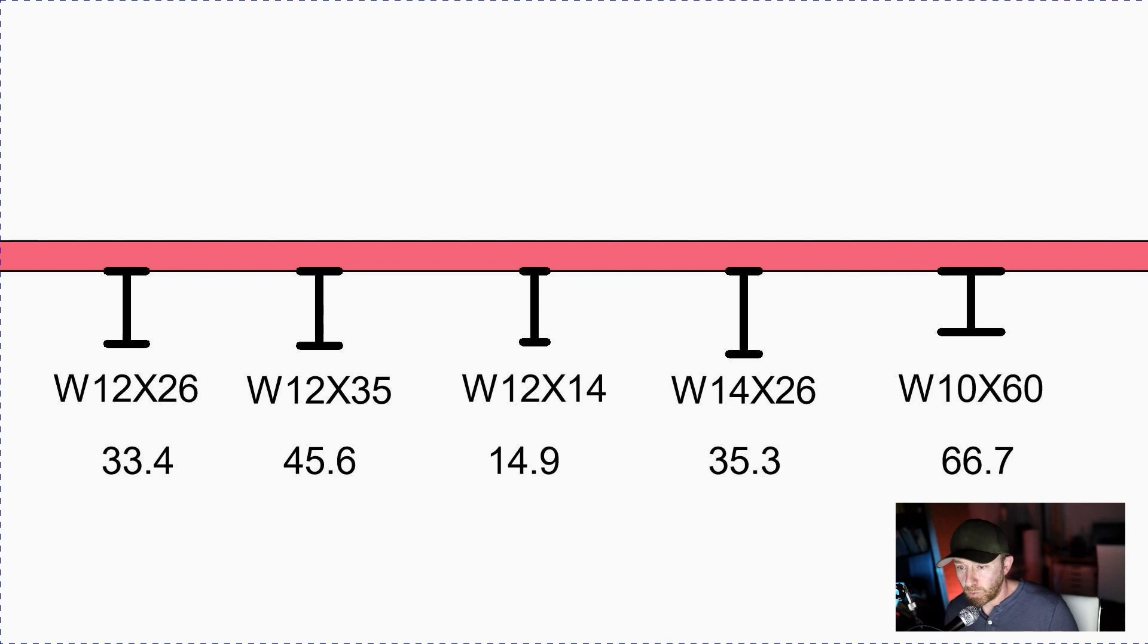Anyway, the last one, which you probably wouldn't know unless you had a table, there's no way, you know, these ones you can all tell just because you can compare the numbers directly. This one, you can't. So you would have to look at a table for this one. So a W10 by 60, it's 10 inches tall, 60 pounds per linear foot. This one actually has the highest section modulus.